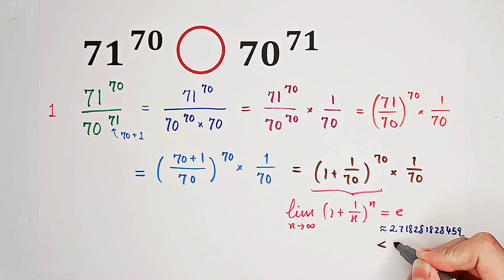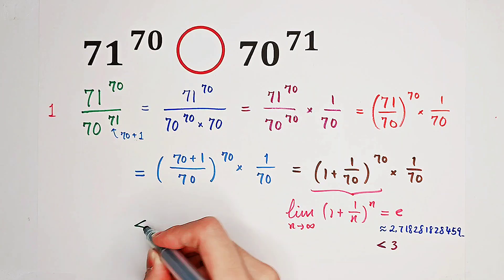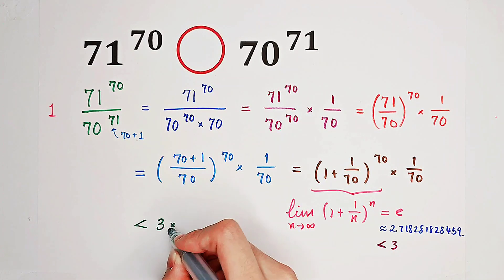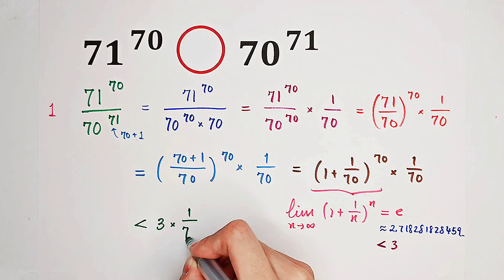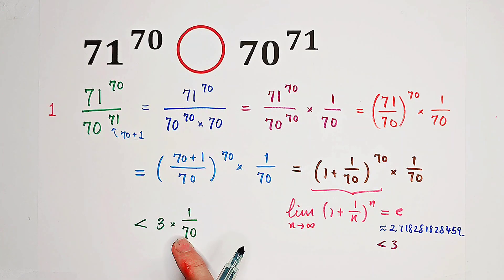So, that means e is less than 3, which implies that this guy is also less than 3. So, the whole thing is less than 3 times 1 over 70.